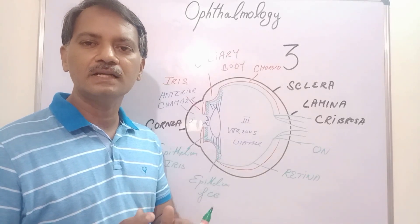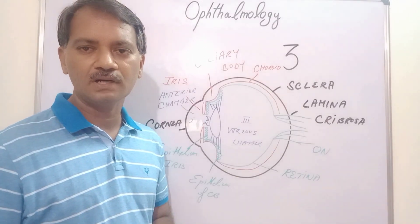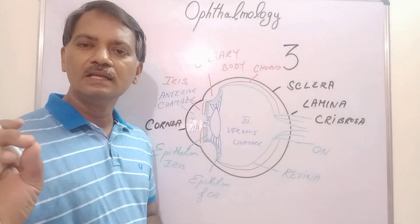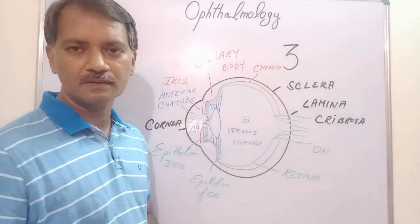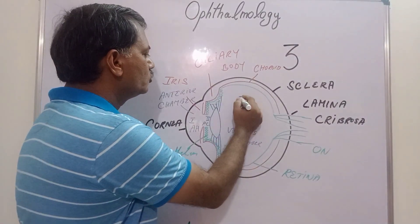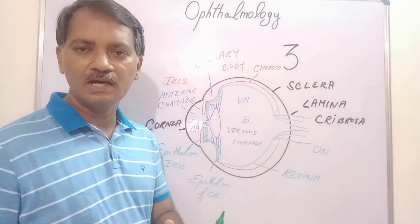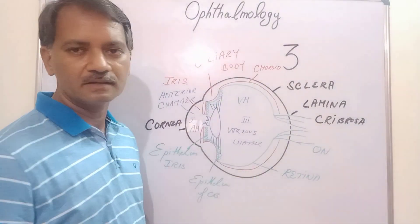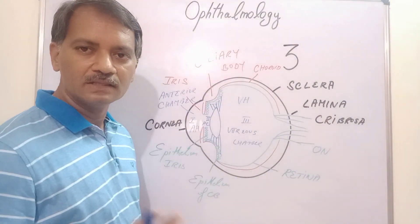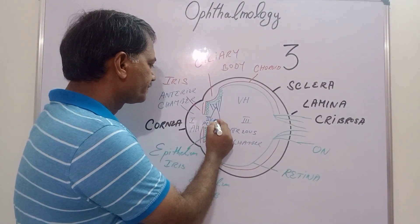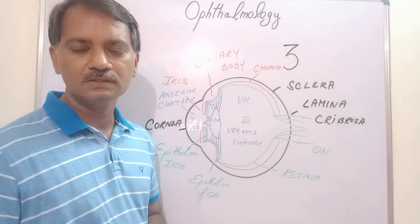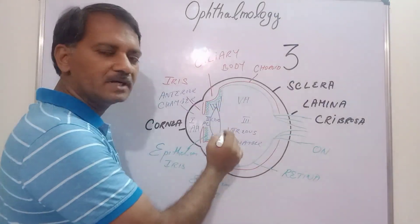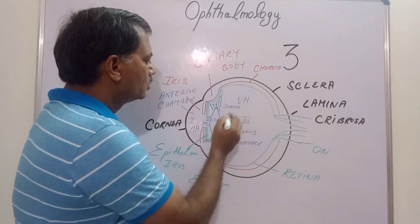Now you should know what are the contents of the eyeball — and the contents are also three in number. First, you have the aqueous humor, a clear fluid occupying the anterior and posterior chambers. Second, you have the vitreous humor, which is a jelly-like substance. As we age, this gel becomes liquefied and becomes a fluid-like thing. The third content, which we have already drawn, is the lens of the eyeball. This lens is suspended by the attachment of zonules to the ciliary body.